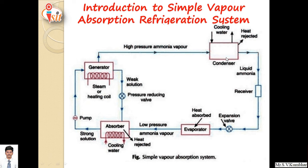This high pressure, high temperature ammonia vapor is sent to the condenser, where it is condensed with the help of a cooling medium — water is shown here. Heat is rejected from high pressure ammonia vapor and it is converted into high pressure ammonia liquid. This liquid is temporarily stored in a receiver, then passed through the expansion valve where pressure reduces considerably, and low pressure, low temperature liquid refrigerant finally flows through the evaporator where heat energy is absorbed from the object to be cooled.